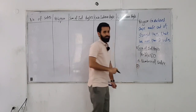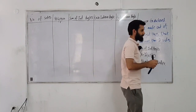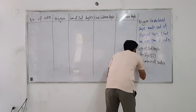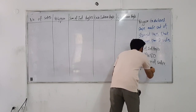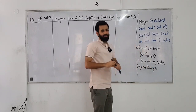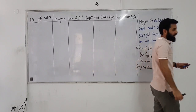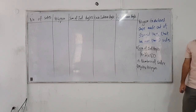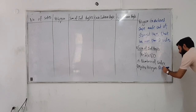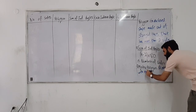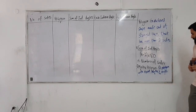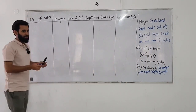Do you know what a regular polygon is? A regular polygon is a polygon that has equal lengths and equal angles. Can you give me an example? A square — a square is a regular quadrilateral. What about a triangle? An equilateral triangle. So a regular polygon is a polygon with equal lengths and angles. For example, an equilateral triangle or a square.